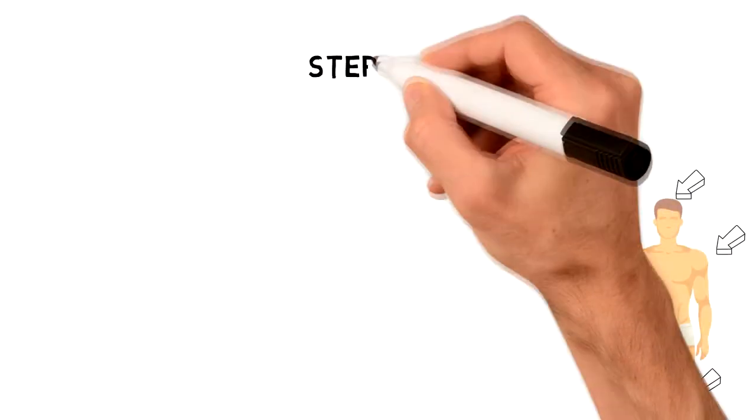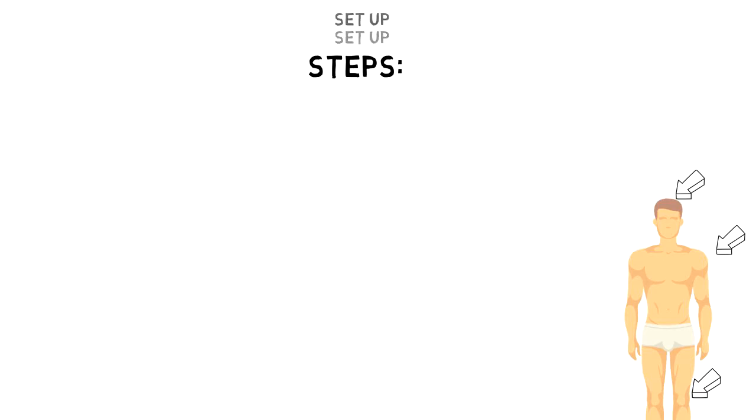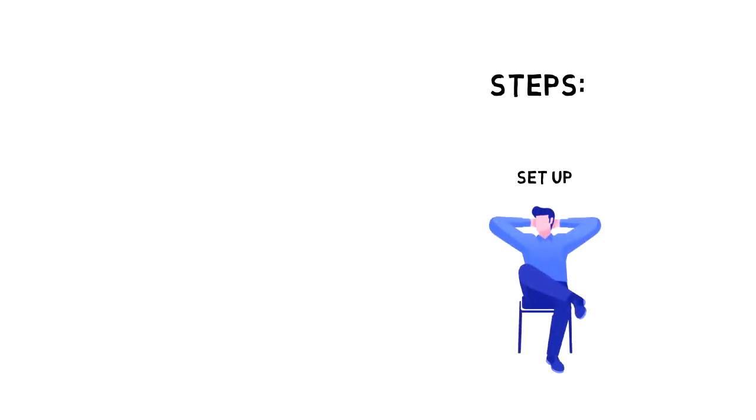Here are the steps to practice autogenic training. First, set up. Find a place where you can lie down or lean back in a chair. Remove glasses and loosen any tight clothes.